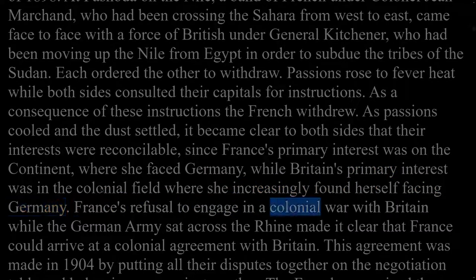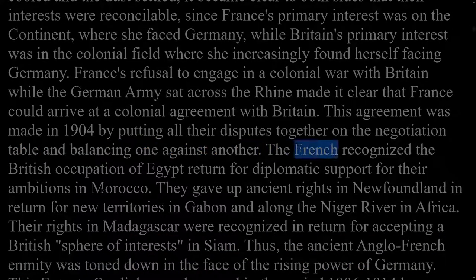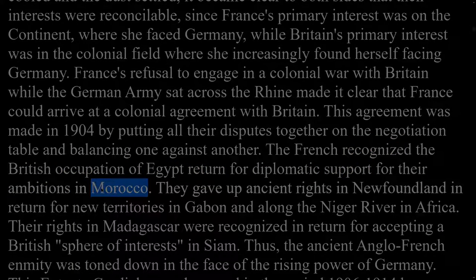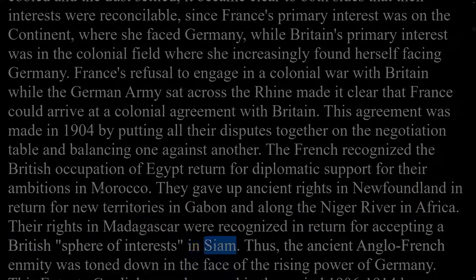France's refusal to engage in a colonial war with Britain while the German army sat across the Rhine made clear that France could arrive at a colonial agreement with Britain. This agreement was made in 1904 by putting all their disputes on the negotiation table and balancing one against another. The French recognized the British occupation of Egypt in return for diplomatic support for their ambitions in Morocco. They gave up ancient rights in Newfoundland in return for new territories in Gabon and along the Niger River. Their rights in Madagascar were recognized in return for accepting a British sphere of interests in Siam.